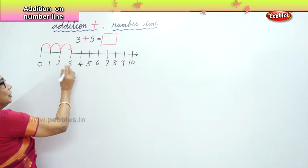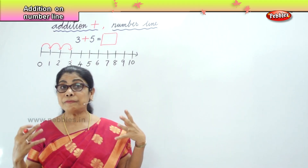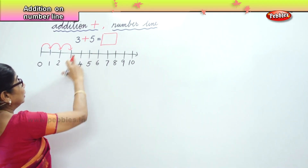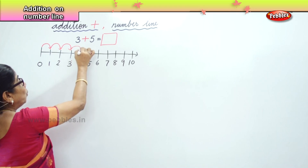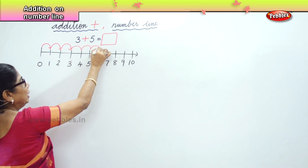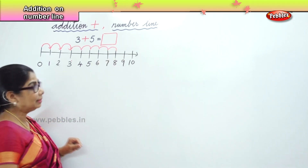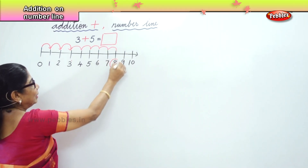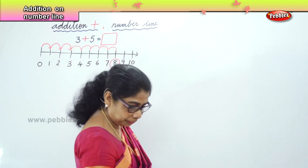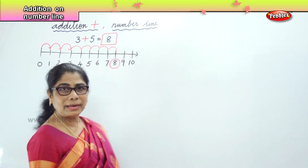The first number is three. Next, we have to jump five times more. So you have one, two, three, four, five. And what is the answer you get? You get the answer as eight. Clear?